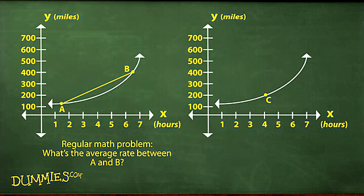Here's a regular algebra problem. If you know where a and b are, you can determine the slope between a and b. In this problem, that slope gives you the average rate in miles per hour for the interval from a to b.